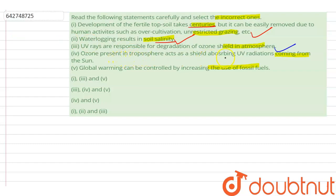The ozone present in troposphere acts as a shield absorbing UV radiations coming from the sun. This is the incorrect statement because the ozone that is present in the troposphere is bad ozone - it is itself a pollutant, a secondary pollutant.